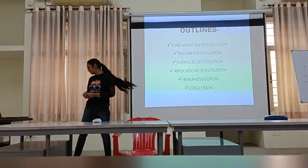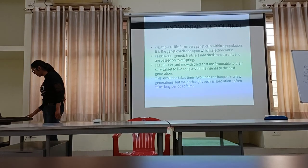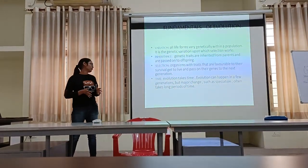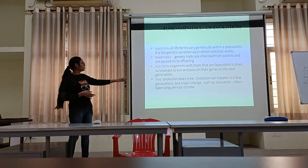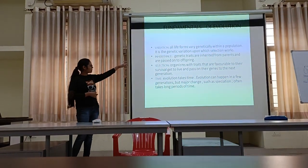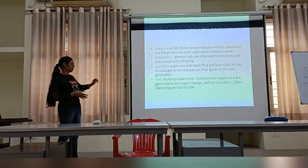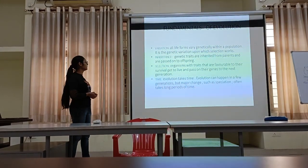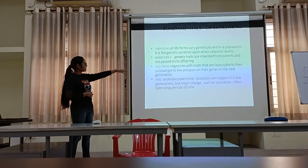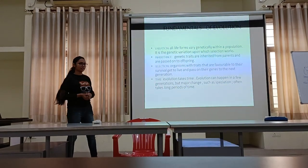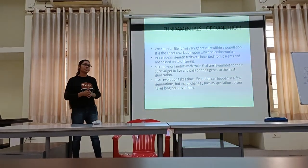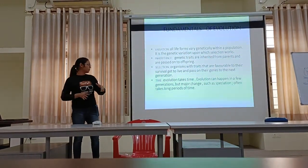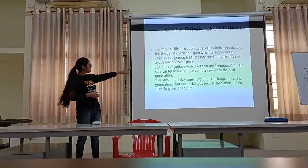Let us talk about the fundamentals of evolution. There are a lot of factors which affect evolution, but here I am talking about four types: variation, inheritance, selection, and time. What is variation? All life forms vary genetically within a population. It is the genetic variation upon which selection works. Every individual has a certain kind of variation which enables them to live in a particular environment.